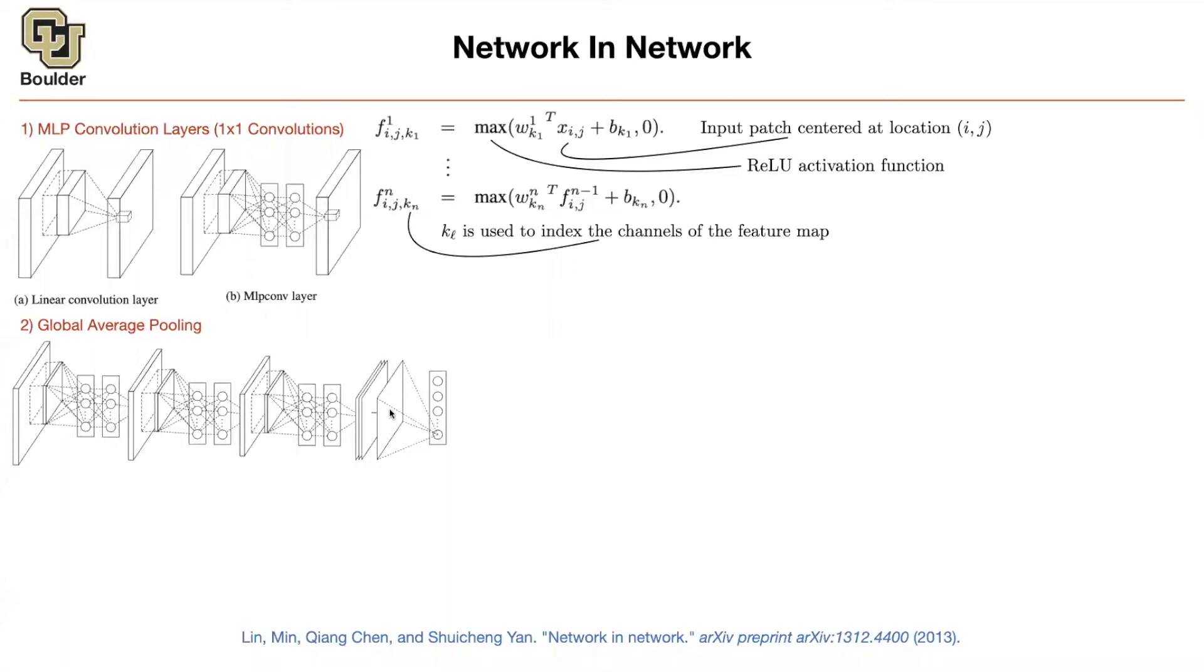The cool thing about global average pooling is that now your entire structure is independent of the resolution of the input image. The convolutions are local and you're just shifting it over your image and they don't depend on the size of the input image. The filters, they have their own sizes.